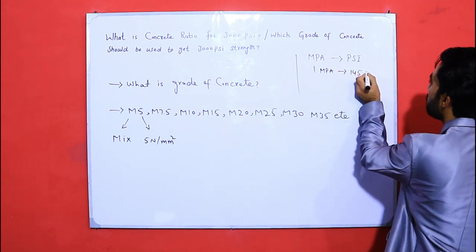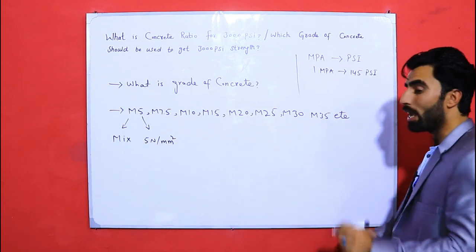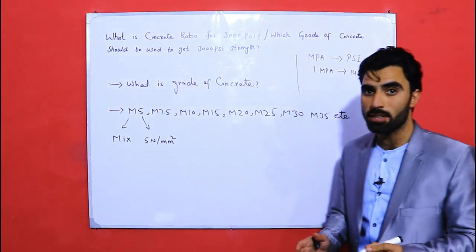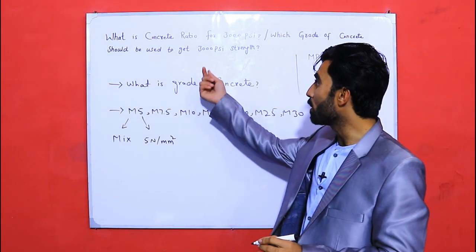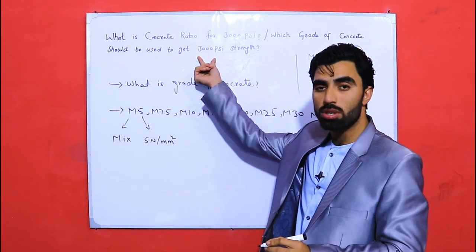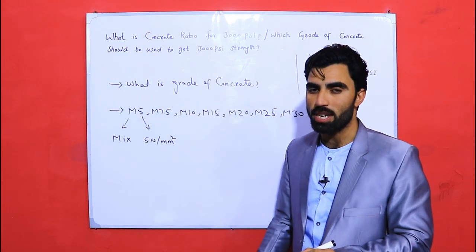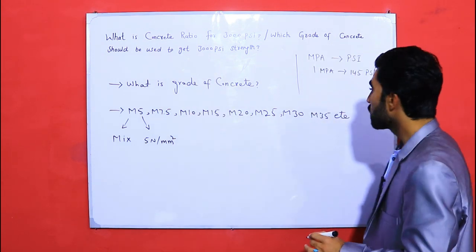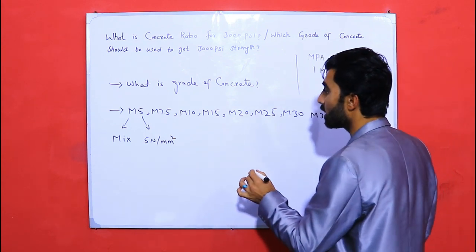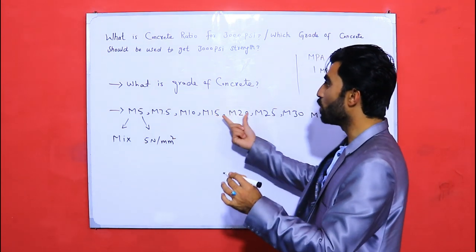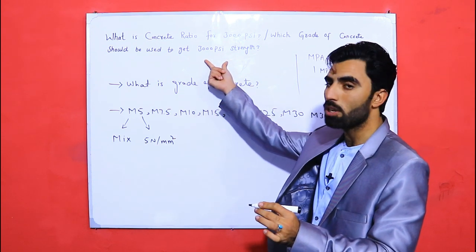Now let me convert MPa (megapascal) to PSI. Remember, 1 megapascal is equal to 145 PSI. With this conversion, you are able to easily find which grade of concrete is suitable to get 3000 PSI strength for your structure.